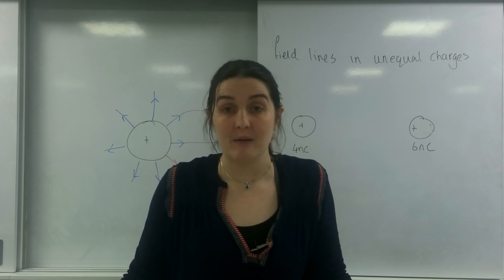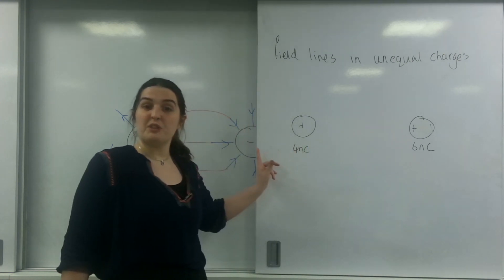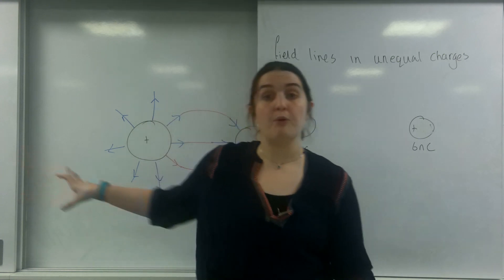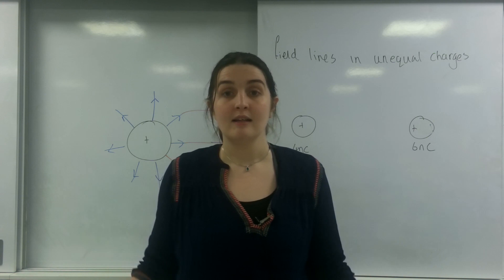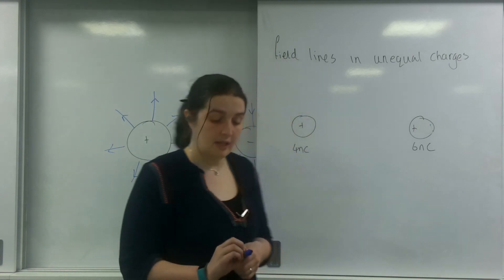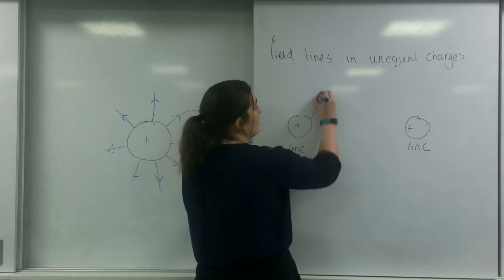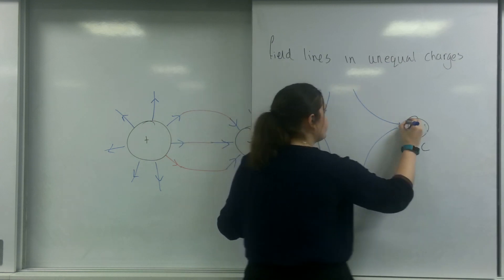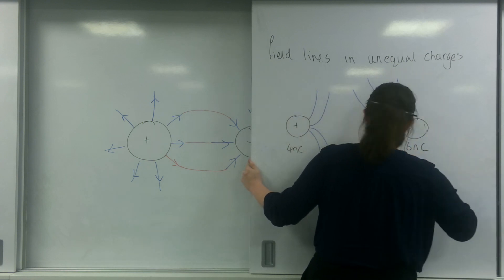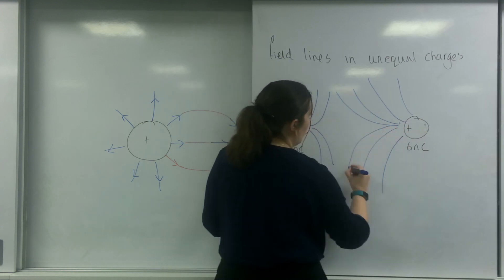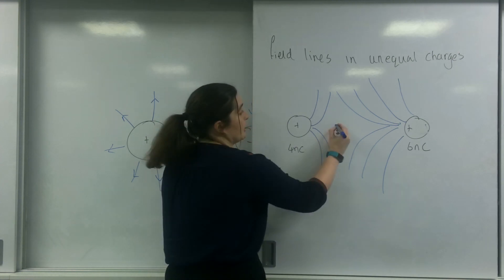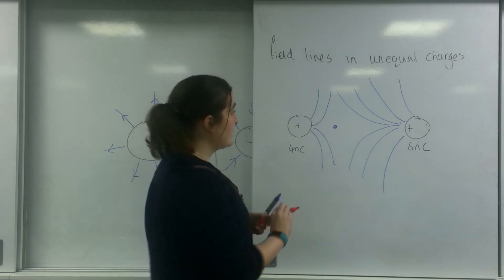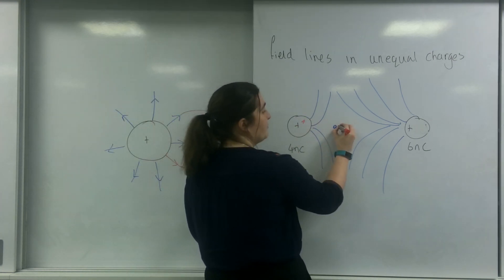Which means it's going to have more of an effect the further away I am than the 4 nanocoulomb charge. A way to think about it is if this was the sun and this was the earth. If I was to stand at a point where the earth is going to pull me as much as the sun, I'm actually going to have to be closer to the earth. So my field lines are going to look like this, where I've got this null region closer to the 4 nanocoulomb. So this is the point where this one is repelling it.